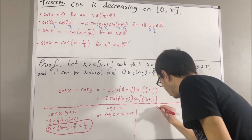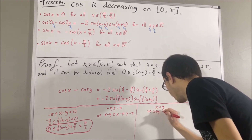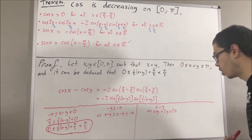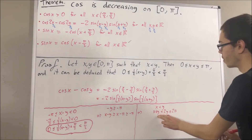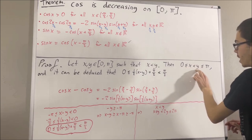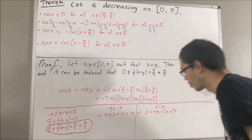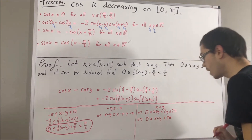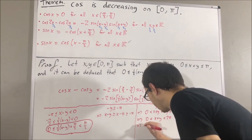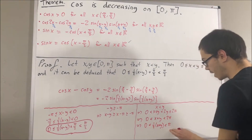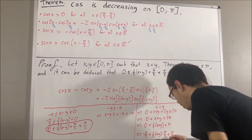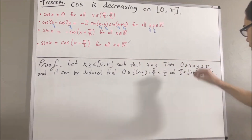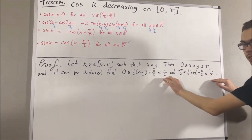Also, since x is less than y, adding y on both sides gives x plus y less than 2y. Since y ≤ pi, we have 2y ≤ 2pi. Also, x plus y is strictly bigger than zero because x ≥ 0 and y > 0, so their sum must be strictly bigger than zero. This tells us 0 < x plus y < 2pi. Multiplying by one half gives 0 < (x plus y)/2 < pi, and subtracting pi over 2 from all three sides gives the resulting bound for (x plus y)/2 minus pi over 2.